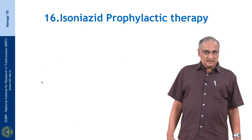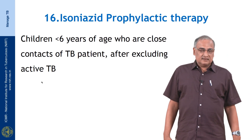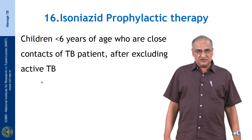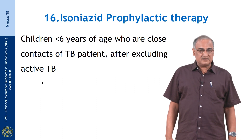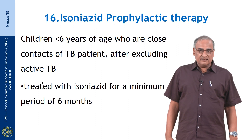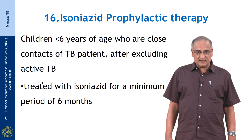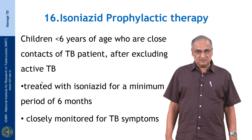Standard 16 is on isoniazid prophylactic therapy. This is given to children less than 6 years of age who are close contacts of TB patients after excluding active tuberculosis. These children are treated with isoniazid for a minimum period of 6 months and are closely monitored for TB symptoms.